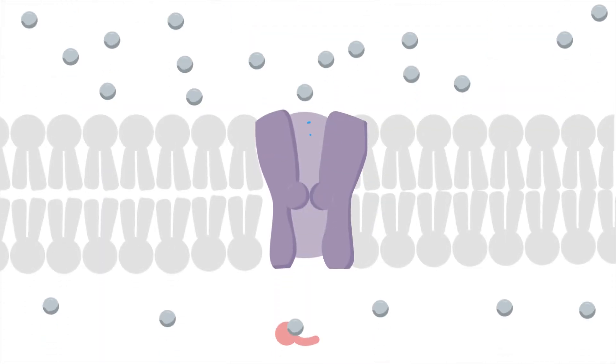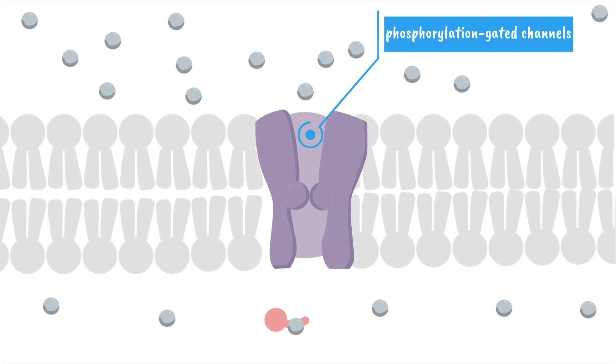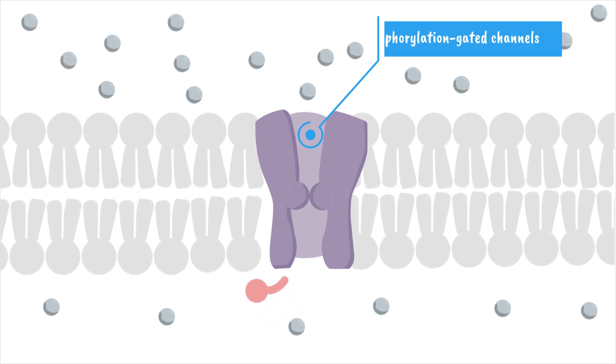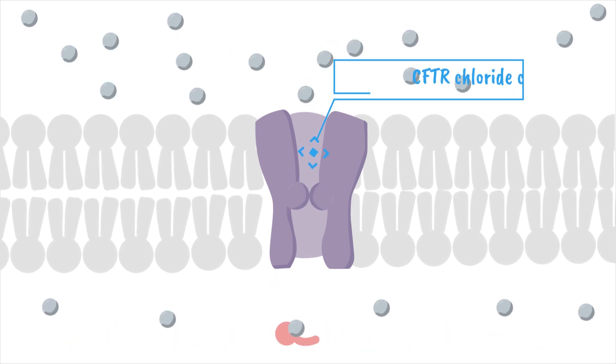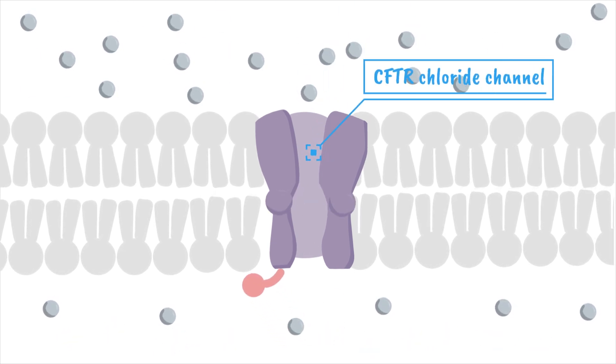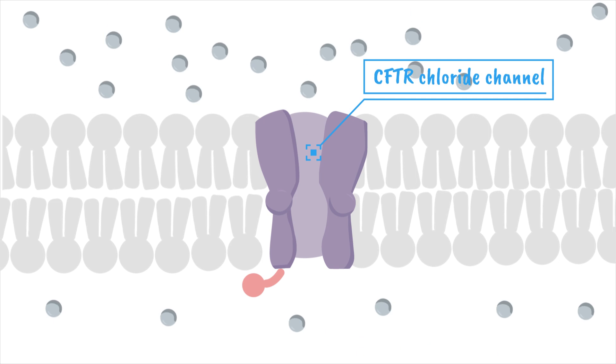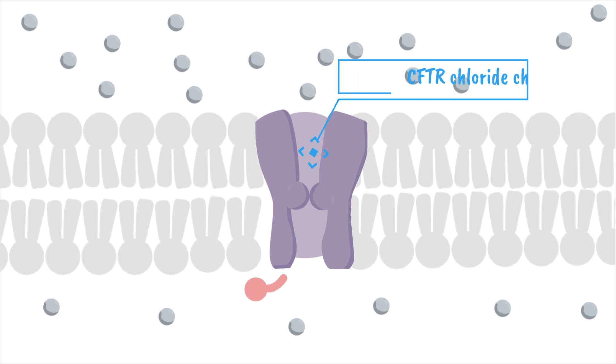Then we have phosphorylation-gated channels, which are controlled by chemical modification. When a kinase enzyme adds a phosphate group to the protein, it changes shape and opens. One example is the CFTR chloride channel, which plays a role in cystic fibrosis and is regulated by PKA phosphorylation.